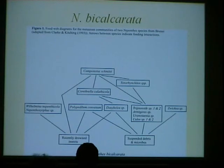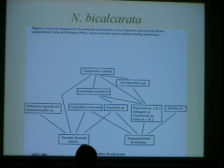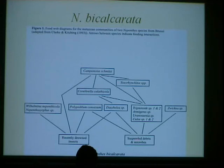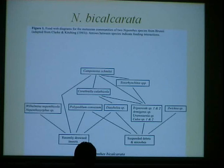A lot of the animals that go into the pitchers eat the dead insects that are caught by the pitchers. But there are a small number of animals that colonise the pitchers that eat other animals swimming or living inside of them. So you get, in any given pitcher, a simple food web. All food web diagrams have at the bottom the primary producers or the primary energy source, and in pitcher communities, that is the insects which have just drowned or suspended debris of old broken up insects and microorganisms.